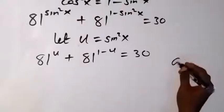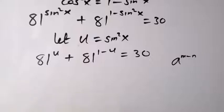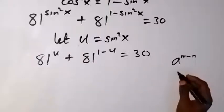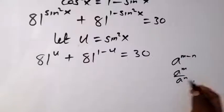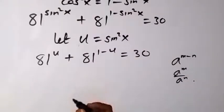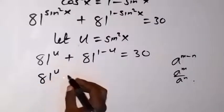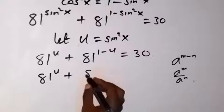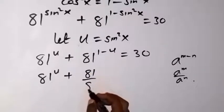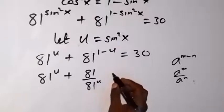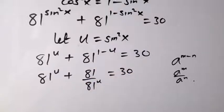We can use the law of exponents: when we have a^(m minus n), we can write this as a^m over a^n. Using that here, this gives us 81^u plus 81^1 divided by 81^u, which is equal to 30.